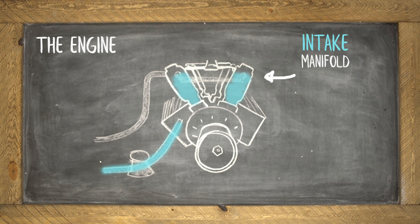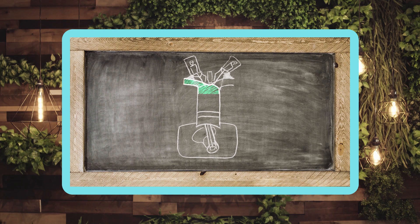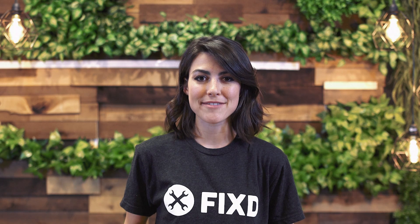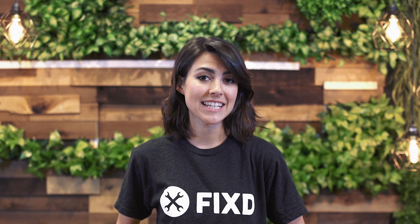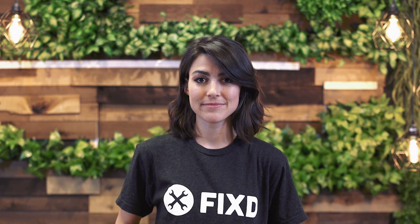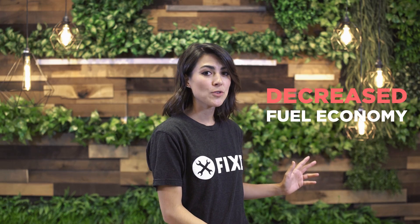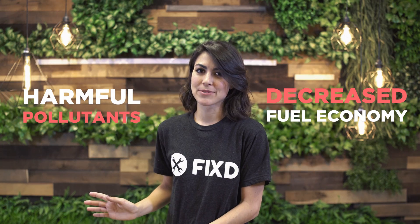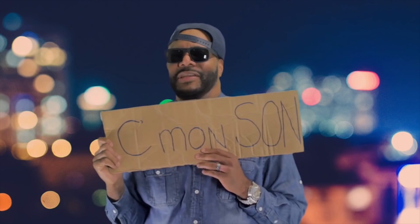The engine draws the mixture of air and fuel vapors into the cylinders. Now that you understand the system, you understand what P0455 means and what a large leak in the EVAP system can lead to: a decrease in fuel economy and harmful gases released to the atmosphere. In fact, these errors account for 20% of pollution caused by a vehicle.